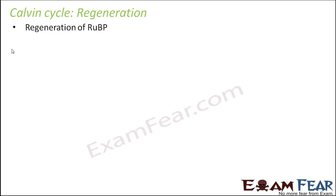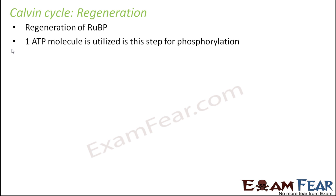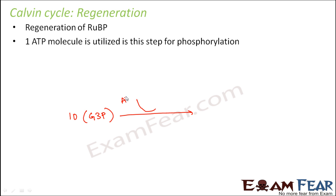In regeneration, regeneration of RuBP takes place. Since it is a cyclic process, the endpoint should also come back to the starting point, and the starting point was RuBP. So RuBP will again be formed. In the last slide we were left with 10 molecules of G3P, that is glyceraldehyde 3-phosphate. These 10 molecules of glyceraldehyde 3-phosphate will utilize ATP, which will get converted into ADP — dephosphorylation takes place — and as a result, RuBP, a five-carbon compound, will be formed.